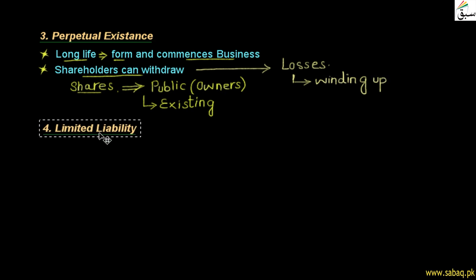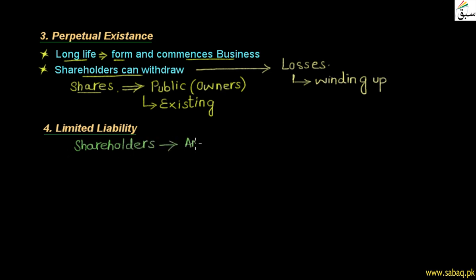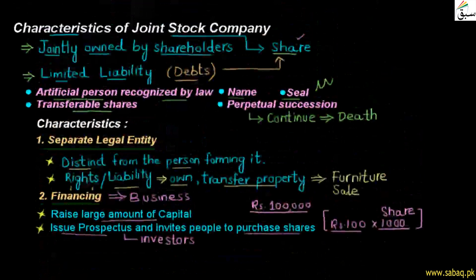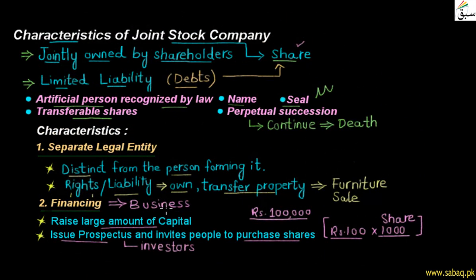The fourth and most important feature is that the liabilities of joint stock company shareholders are limited. Limited liabilities means that the amount they have invested in the company — the amount of shares — that is the extent of their debt obligation for the company's liabilities. Their liabilities are limited to the value of their shares. In this video, we have seen the four characteristics of the joint stock company. There are some other characteristics which we will see in the next video, and then we will make the accounts of joint stock company and see what type of shares are issued.